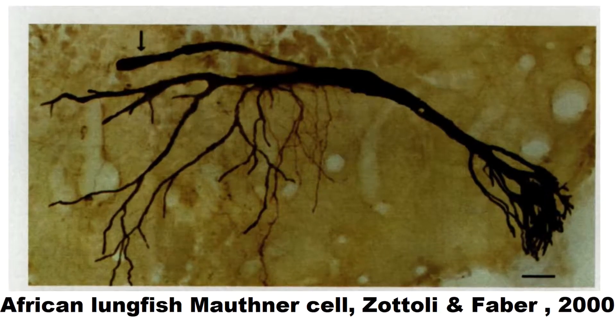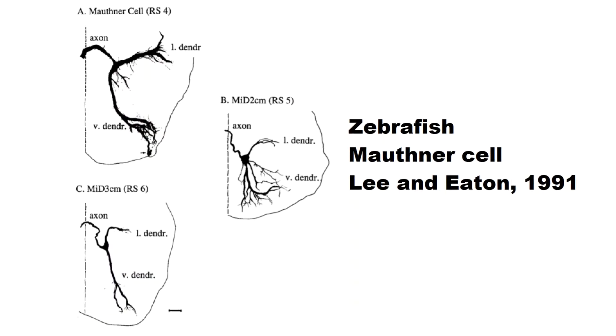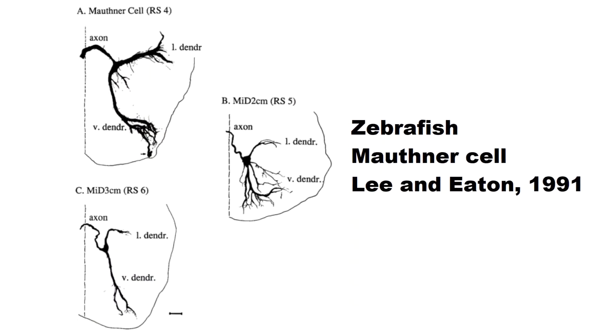It is mediated by the two Mauthner cells, large neurons in the brainstem of fishes.